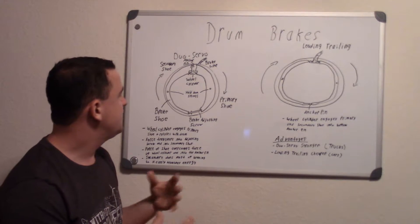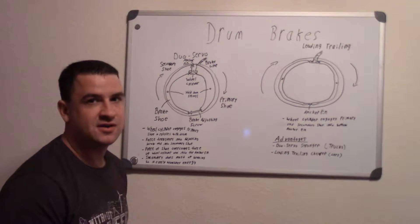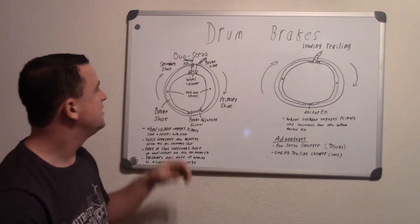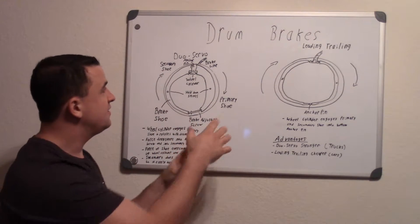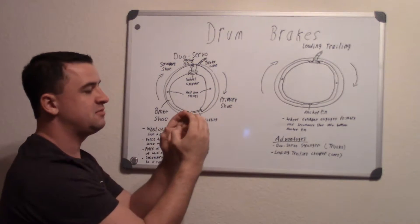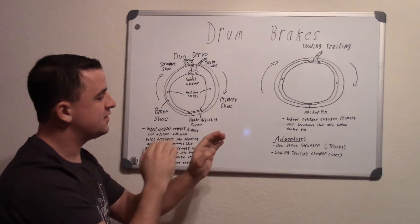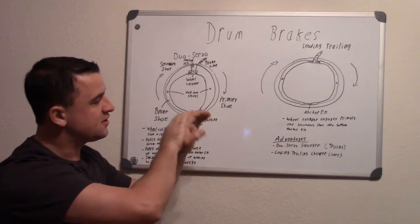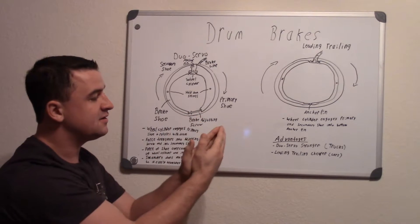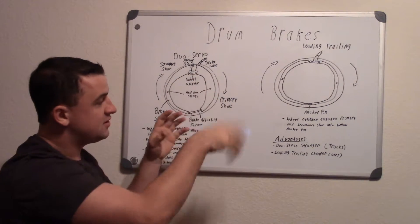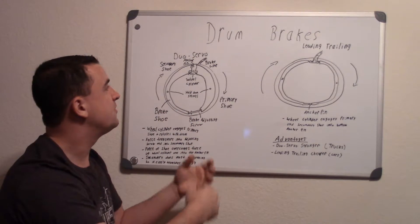Now if you're just wondering how drum brakes work in general, basically you have these parts right here which are known as the brake shoes and they're inside a drum that is covered over all this. These shoes basically spread out and they come in contact against the rotating drum. So when these shoes come out and contact it, like the pads contact the rotor, it stops it from turning and this drum rotates with the wheel and stops it from turning.